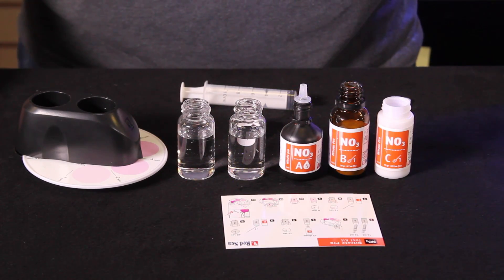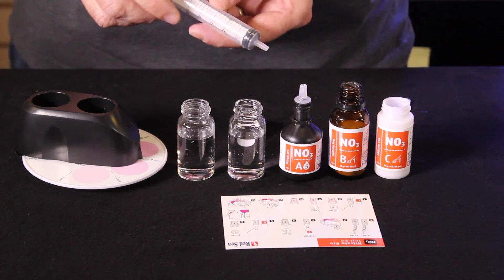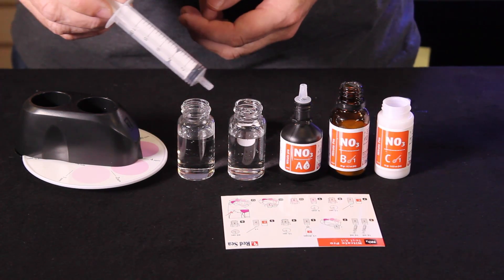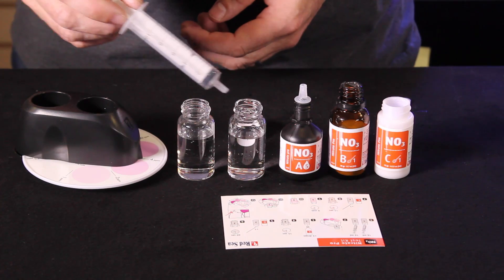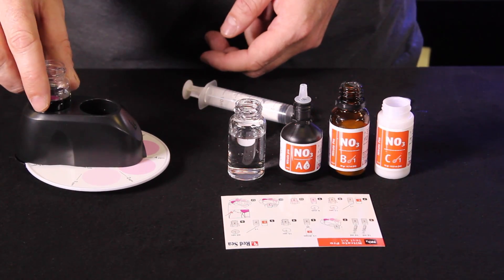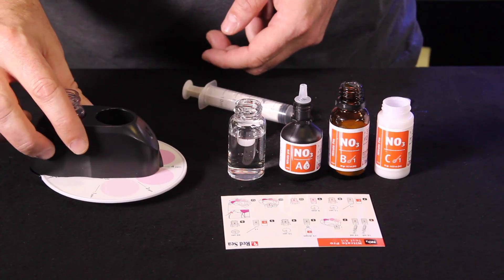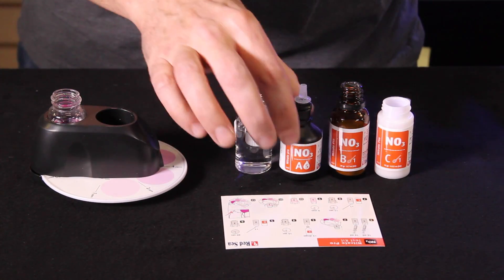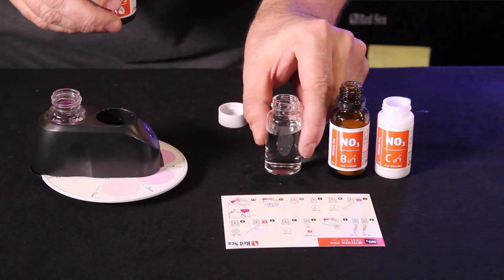All right now we're going to do Red Sea's Nitrate Pro test kit. The first step to this test is to add 16 milliliters of sample water from your aquarium to each of two test vials. The first vial goes in the outside chamber of your color comparison wheel. That's your blank sample. The next vial is the one you will add your reagents to.